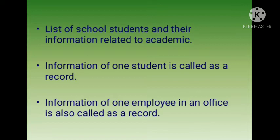In a database, we can store information like the list of school students and their academic information. The information of one student is called a record. In this way, we can save different students' information as different records. Similarly, we can save the information of an employee in an office or organization, also called a record. So a company saves the information of all their employees for future reference.